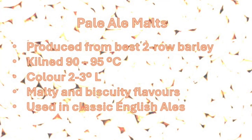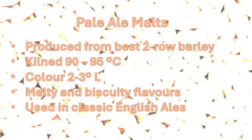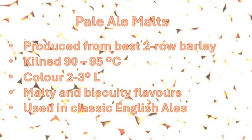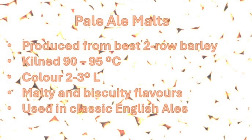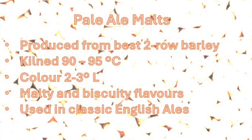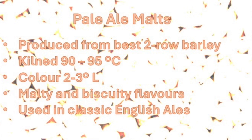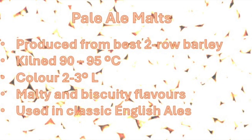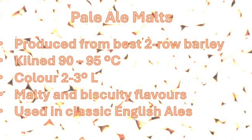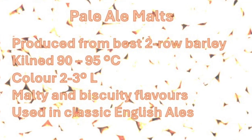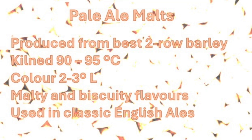Pale ale malts are produced from the best two-row barley with very low protein content. Kilning temperatures of 90 to 95°C, or 194 to 203°F, remove any grassy notes. The color is two to three Lovibond. They are characterized by malty and biscuity flavors with slight toffee notes, and are used for the production of classic English ales.